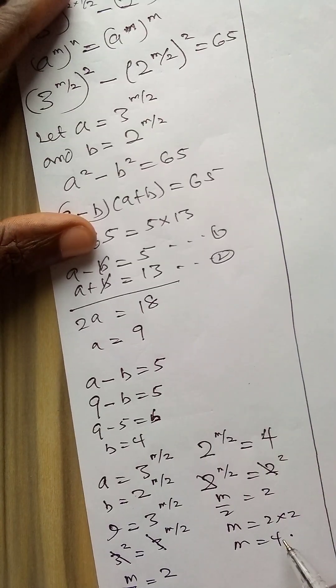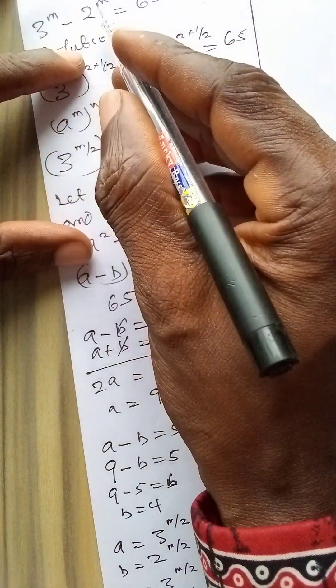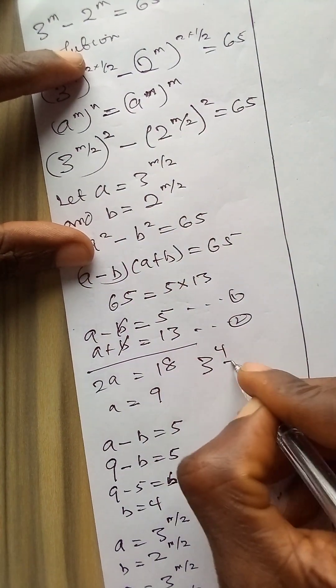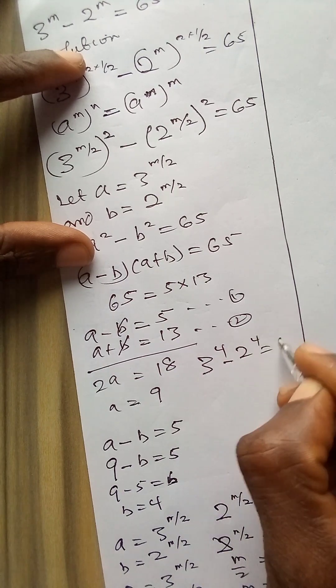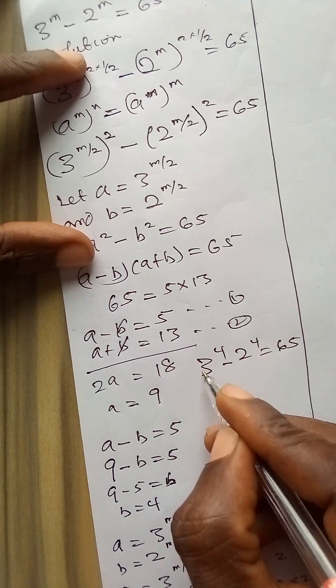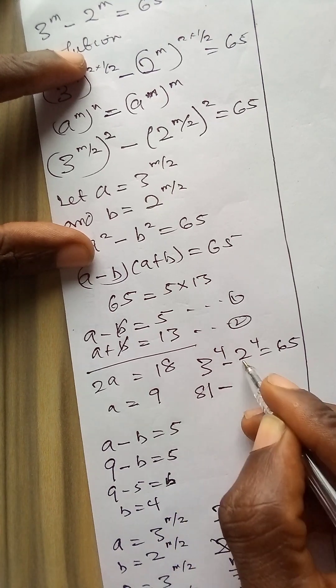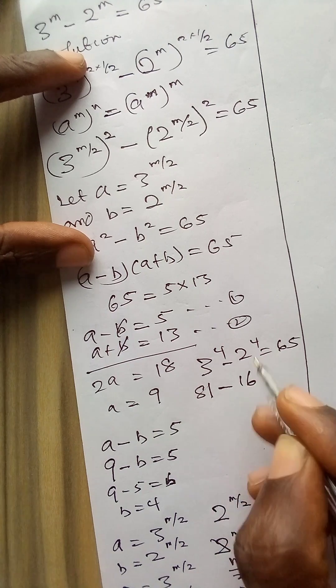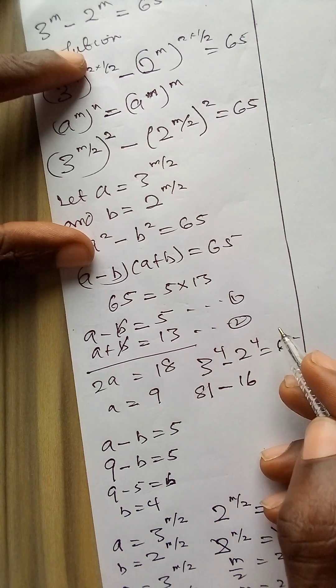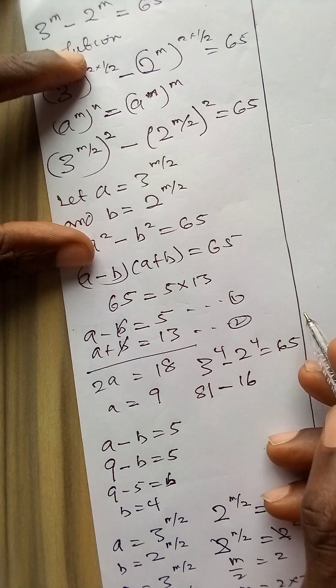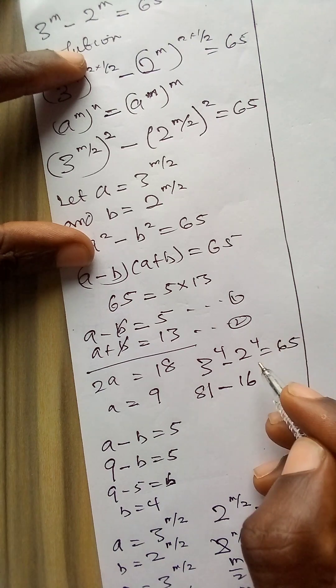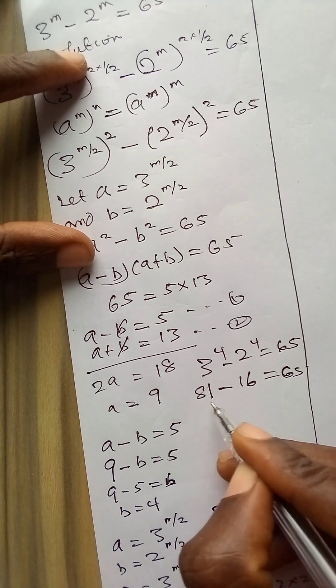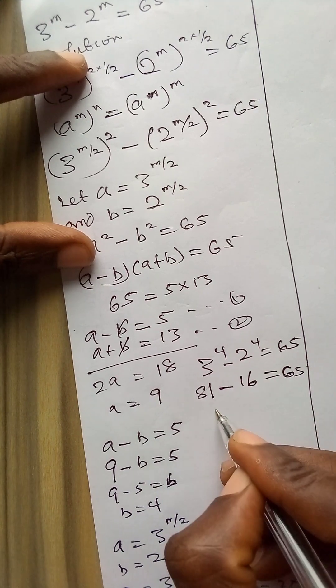Now if I put in the 4 in the original question I will have 65. So 3 to power 4 minus 2 to power 4 is 65. 3 to power 4 is 81 and 2 to power 4 is 16. Yes, 2 times 2 is 4, 4 times 2 is 8, 8 times 2 is 16. So I have this equals to 65. Of course if you remove 16 from 81 you will get 65.